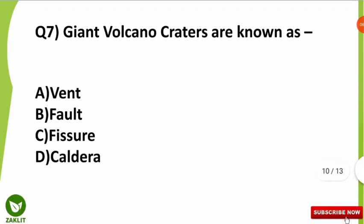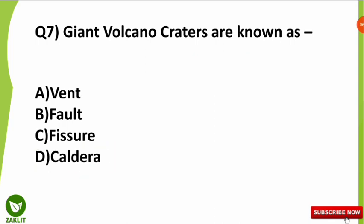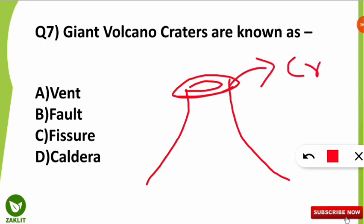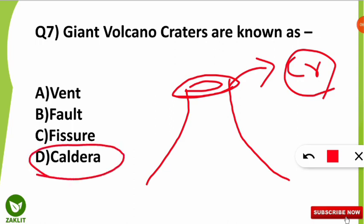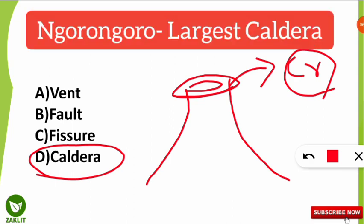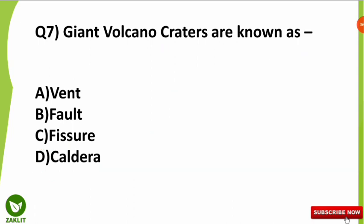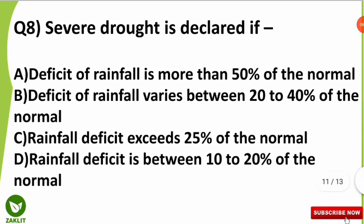The seventh question was from volcanoes: giant volcanic craters are also known as what? The correct answer is caldera. To illustrate — the mouth portion of a volcano is called the crater, and a crater that is giant or larger in size is known as a caldera. The largest caldera found on Earth is located in Tanzania — the Ngorongoro caldera, near the Ngorongoro volcano.